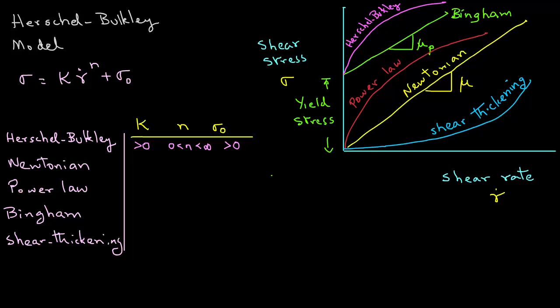In the case of a Newtonian liquid, k will be greater than zero, but the value of n will be one, and the value for yield stress at zero shear rate, sigma zero, will be zero.